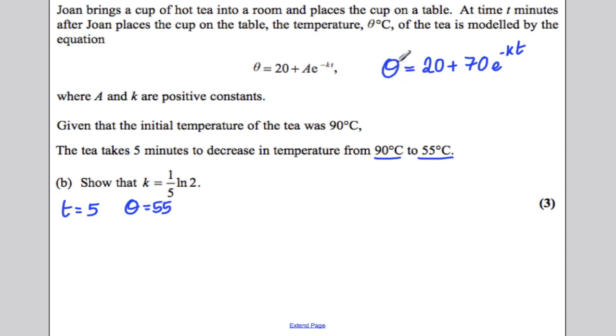So, we can substitute these into the equation. So, we can write, therefore, that 55 is equal to 20 plus 70e to the negative K times 5, which I'm going to write as 5K.